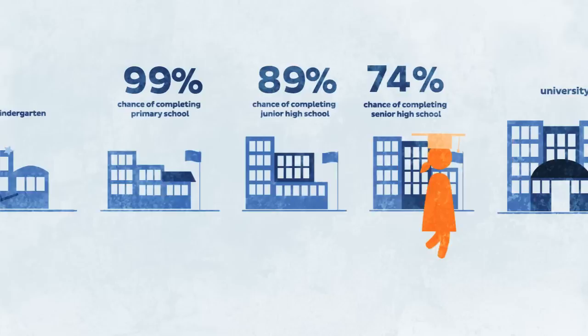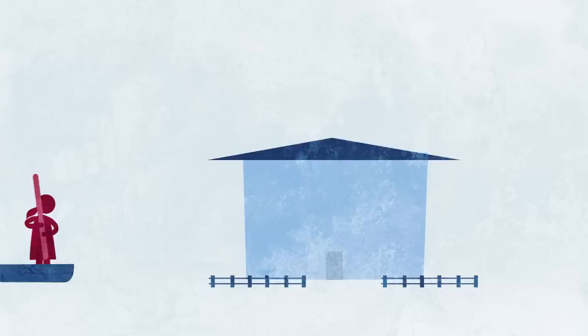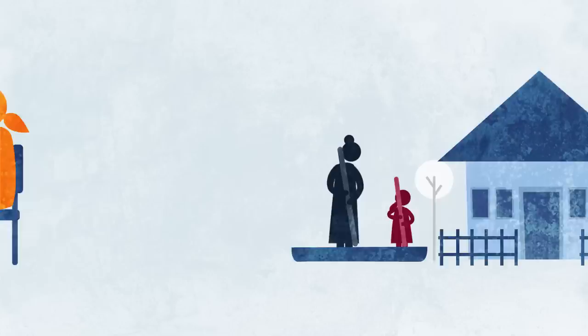Dewi made it all the way to her high school graduation and then continued on to university. Putri started school too and finished grade 6. But because the extra cost for books, uniforms and travel were too high, her family could not afford to keep her in school. Instead, they needed her to earn extra income for the household.